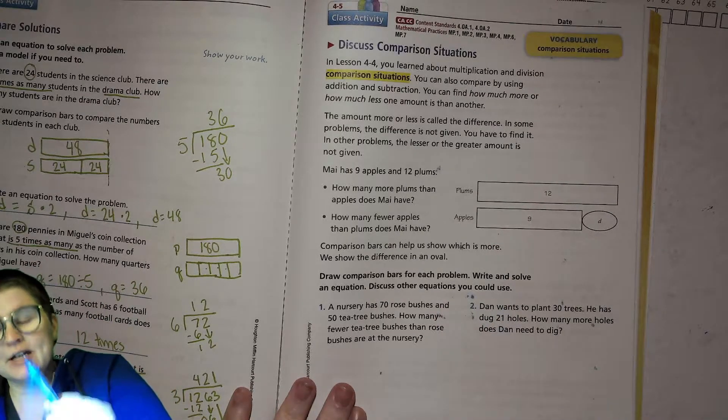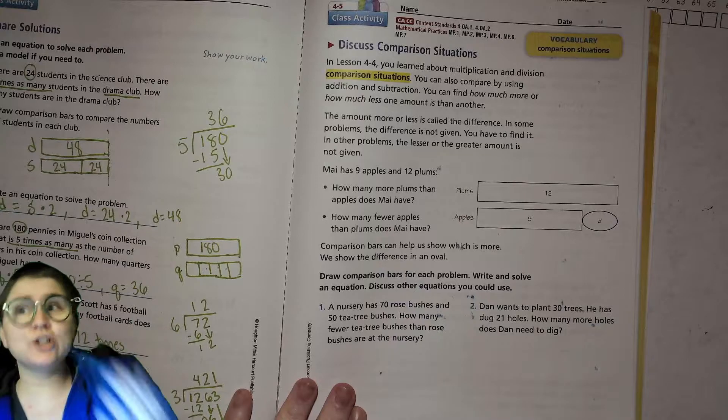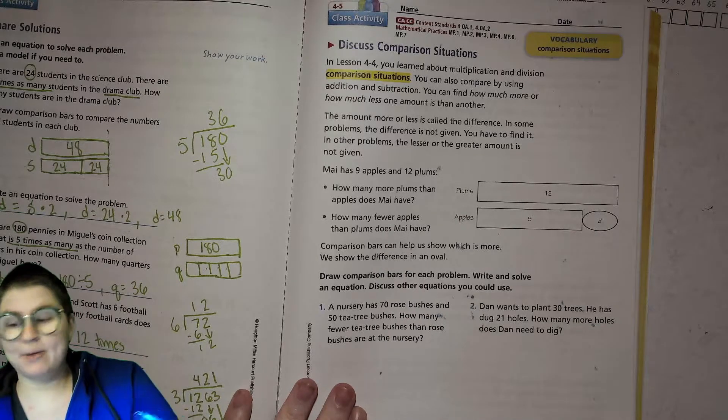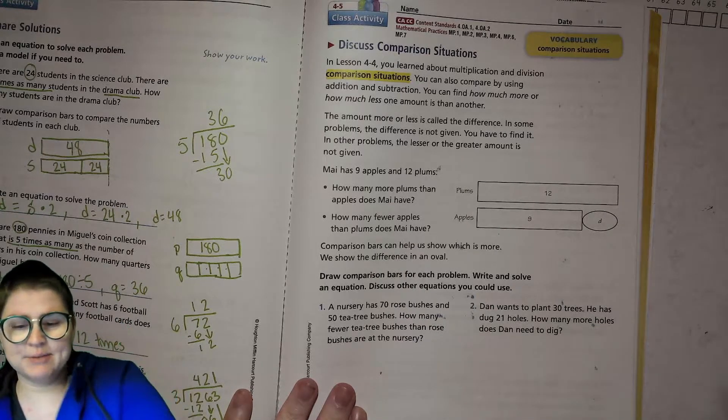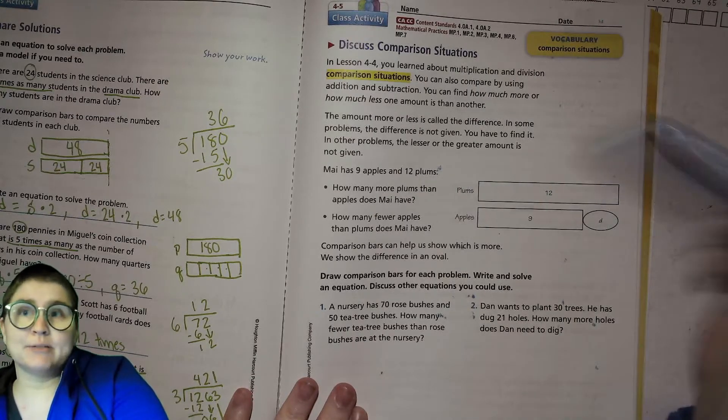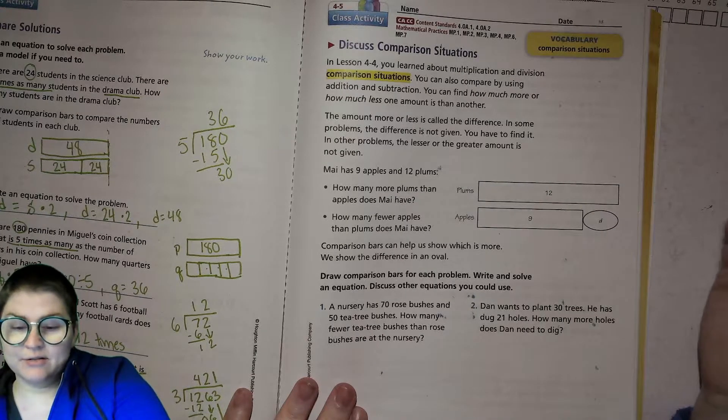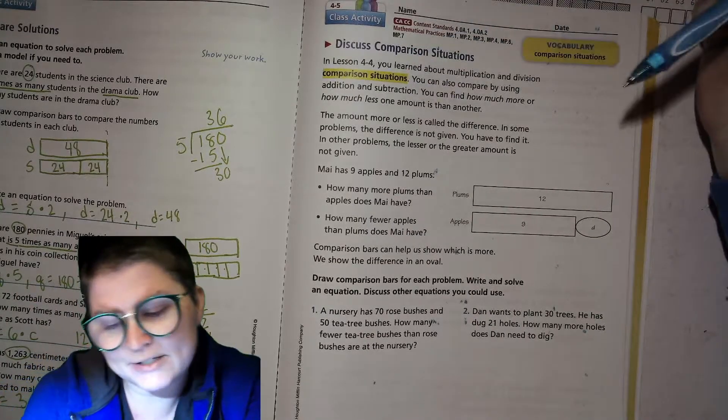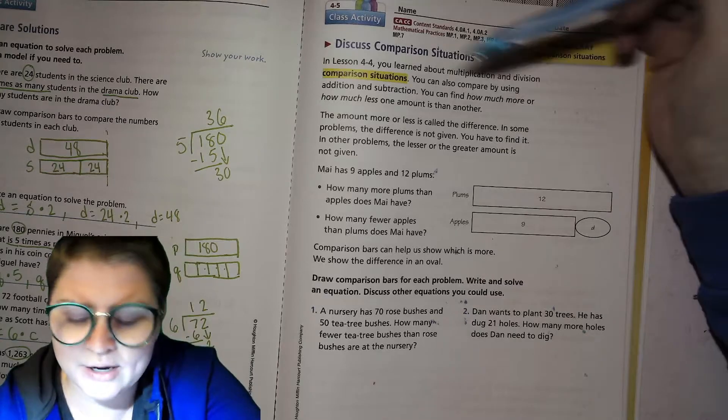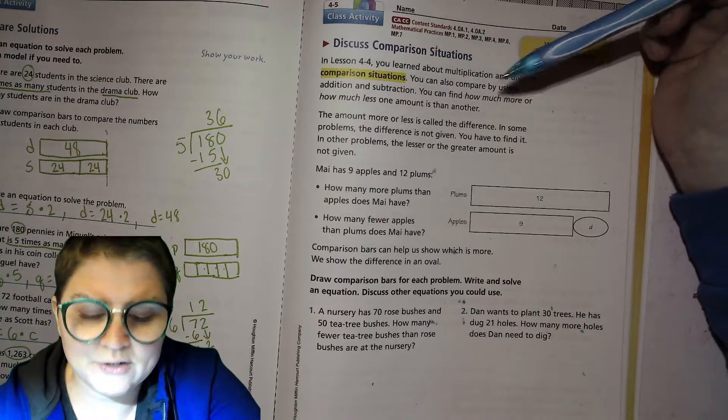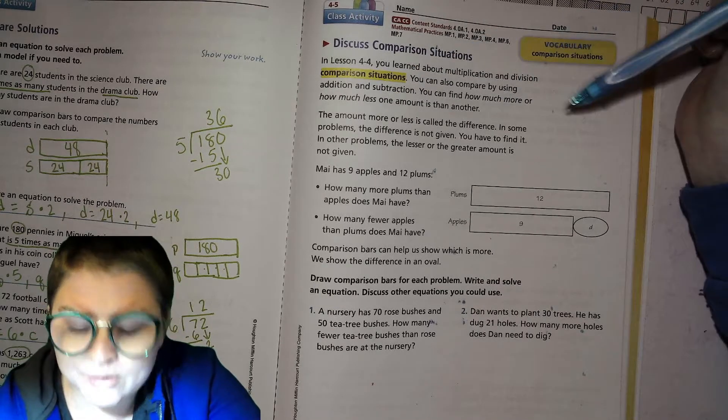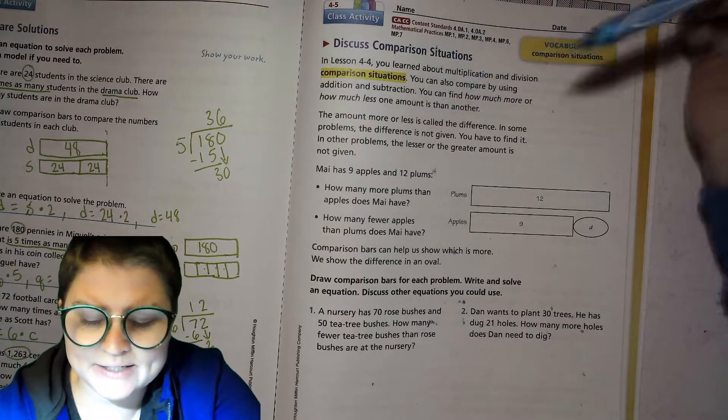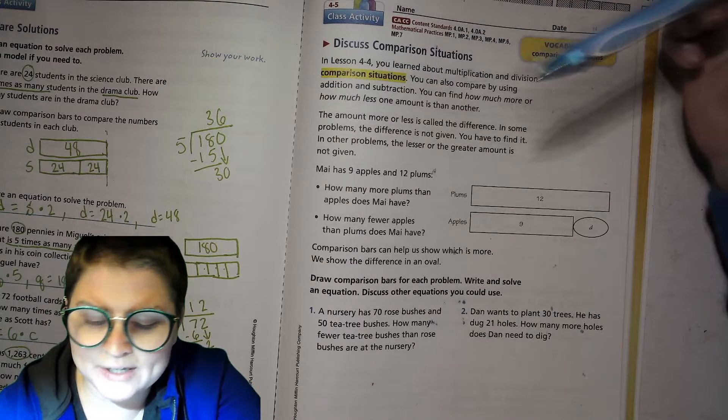In today's activity we're doing comparison situations, and this should be very familiar. These are comparison bars that should look very normal for you. In lesson 4 you learned about multiplication and division comparison situations, but you can also compare using addition and subtraction. You can find how much more or how much less one amount is than another.